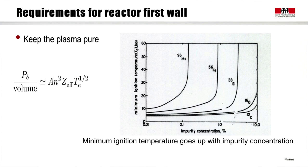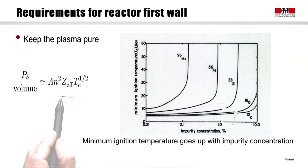The reactor first wall has to keep the plasma pure. That is very important for two reasons. If we inject impurities in the plasma volume, we have dilution of the plasma fuels — we replace the ions with which we want to achieve fusion by ions that don't achieve any result for us. Also, if we inject impurities in the plasma, they radiate mainly by line radiation if not fully ionized, or by Bremsstrahlung radiation, as we have seen together.